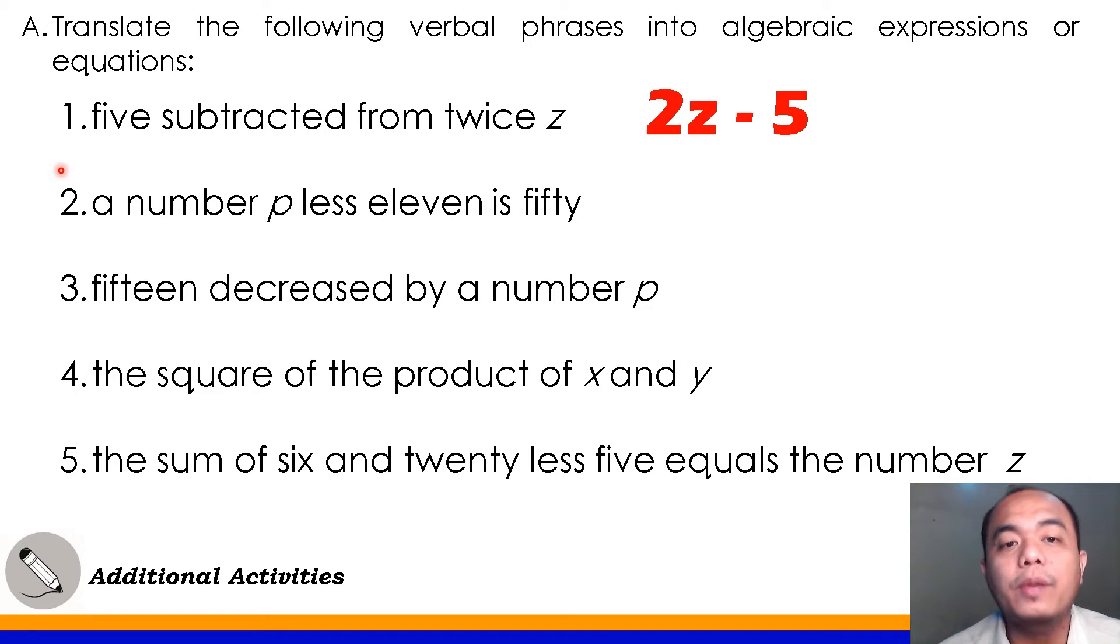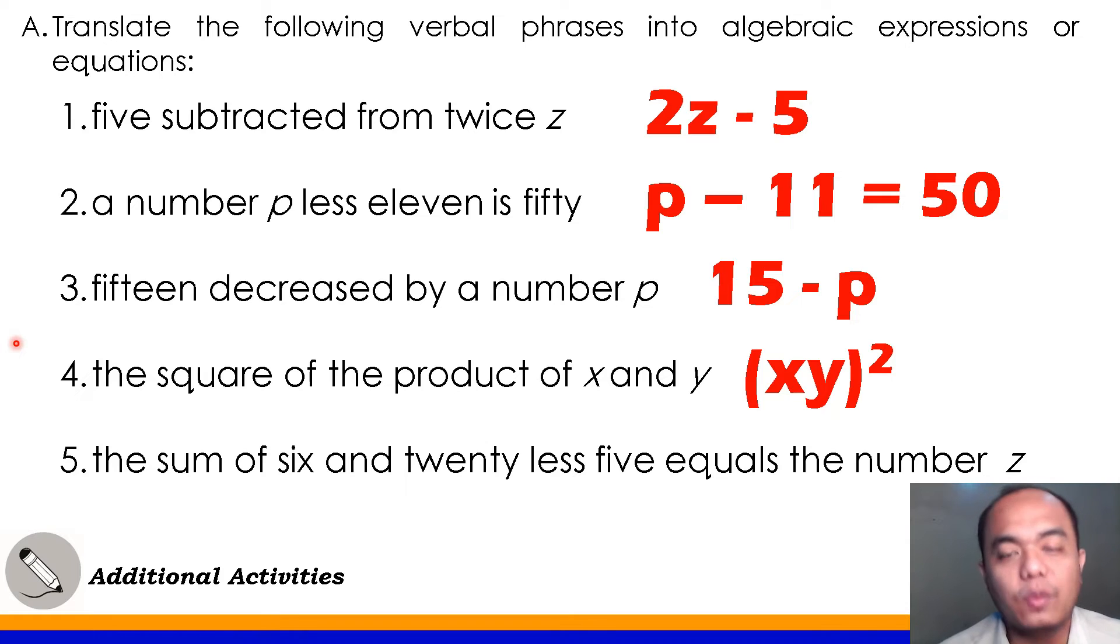Number 2, a number P less 11 is 50. Very good! It's P minus 11 equals 50. P is what will be subtracted by 11. Number 3, 15 decreased by a number. Very good! 15 minus P is the translation. Number 4, the square of the product of X and Y. Very good! XY squared.